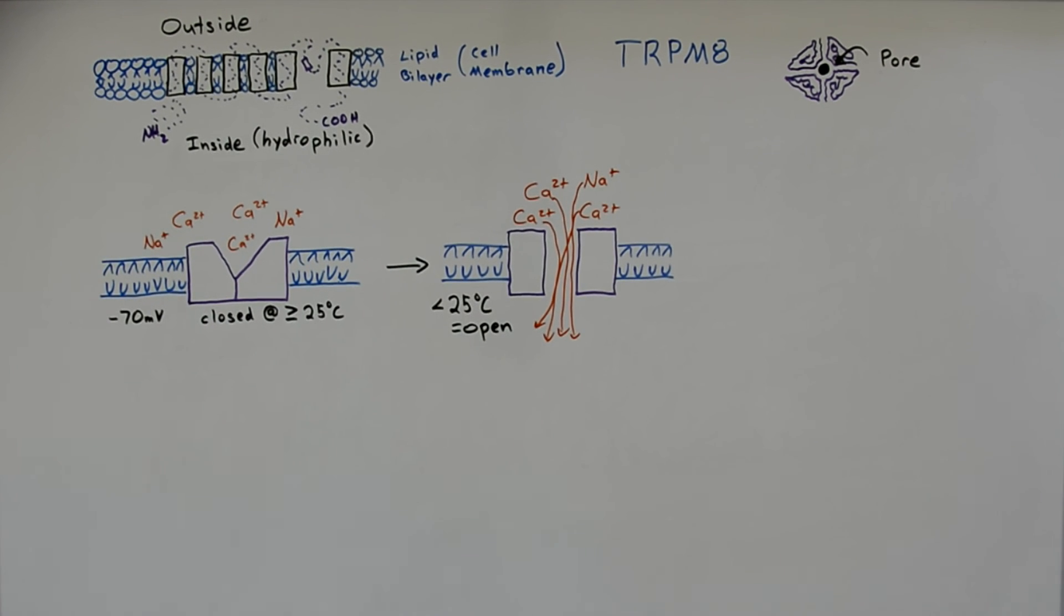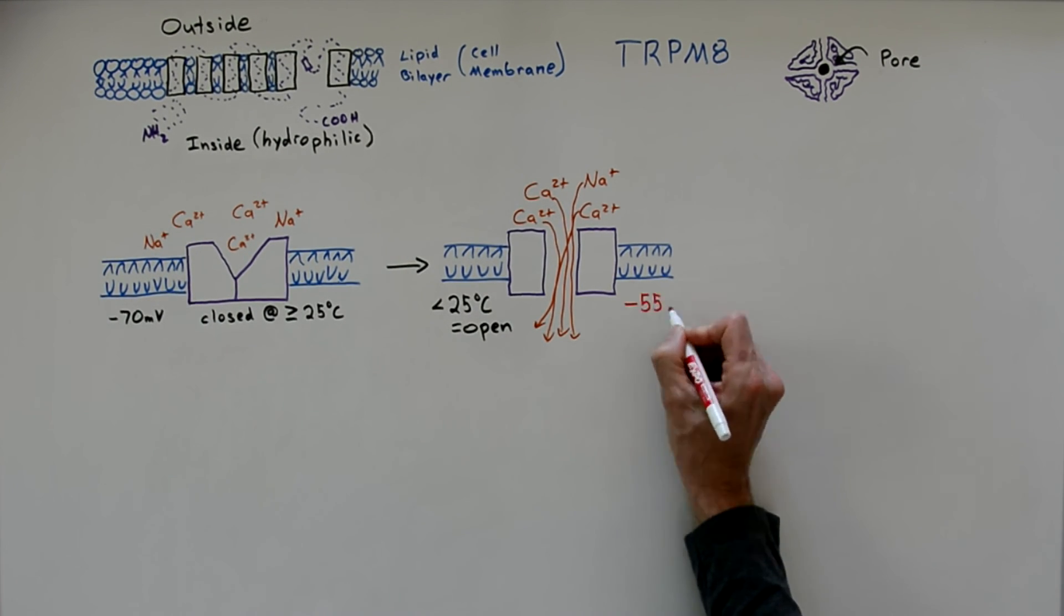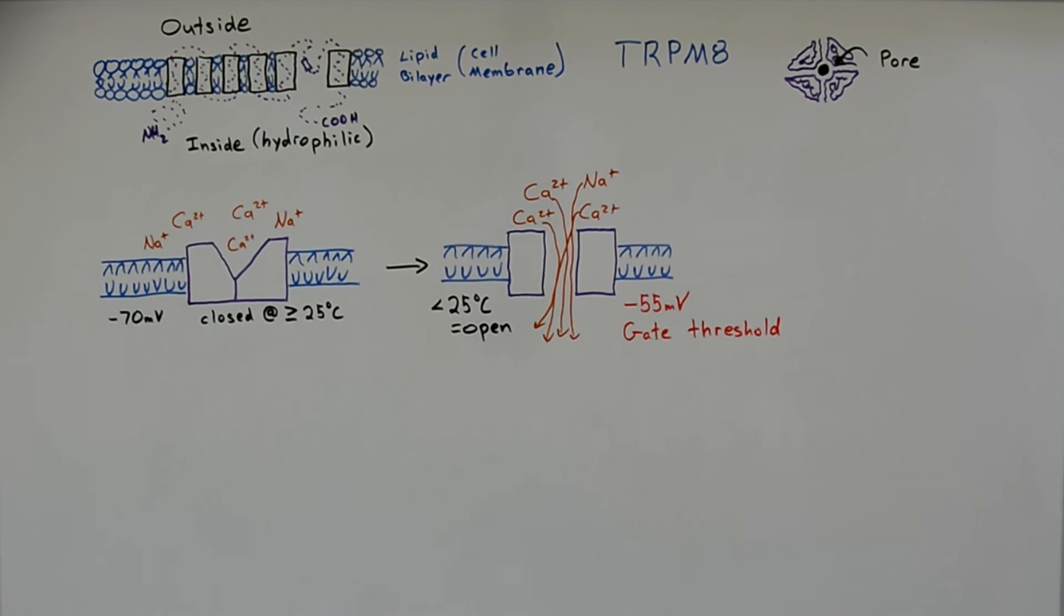But if the temperature is lowered below 25 degrees Celsius, then all of the various tetramers inside the tip of the neuron near the skin undergo a conformational change, and the conformational change exposes the pore, and the various cations can then flow inside the cell.